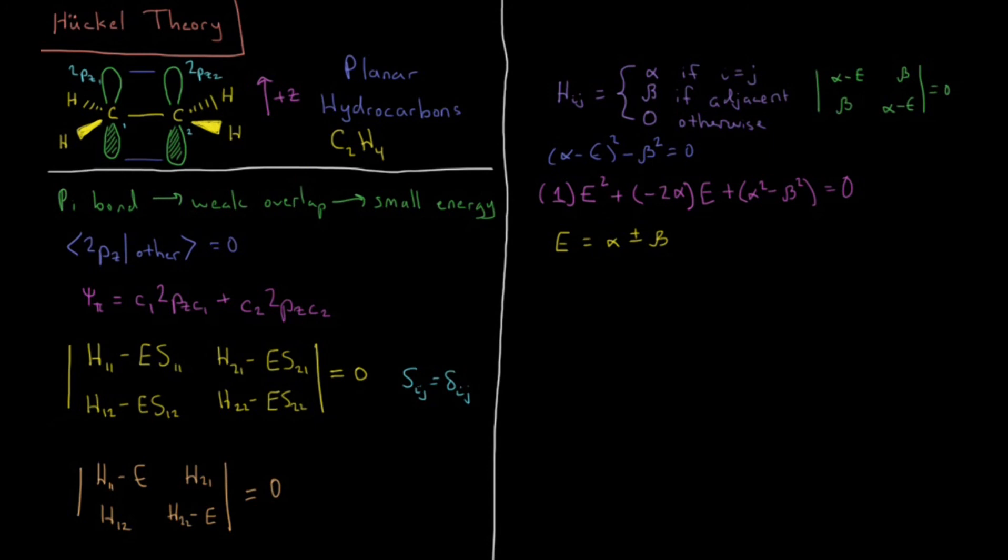So what does this result mean, how do we interpret this? So the alpha is just going to define the zero of energy. So alpha kind of gives us a reference point, because what is alpha? Alpha is a Hamiltonian matrix element if i equals j, so that's H11. So even if the molecule were completely non-interacting, even if the molecule were separate, even if this were a carbon atom on its own, it would still be alpha. So alpha is just the energy of the p orbital by itself.